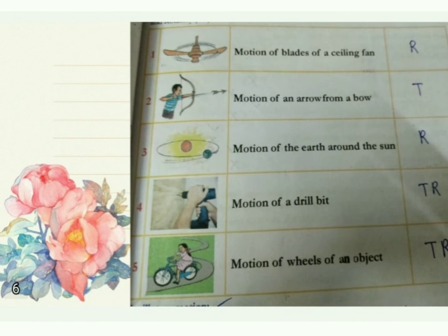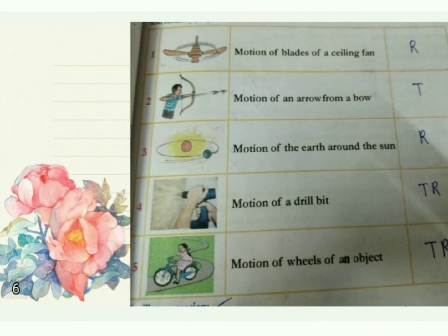A few more examples from your textbook: motion of blades of a ceiling fan — that is rotatory (R). Motion of an arrow — it goes in a straight line, so translatory. Motion of Earth around the Sun — that is rotatory. Motion of a drill bit — here it is drilling. Did you ever see a drill bit? When drilling into a wall, the bit enters straight into the wall while also rotating.